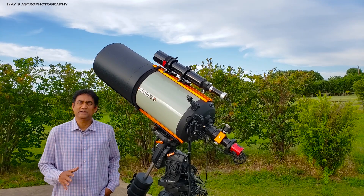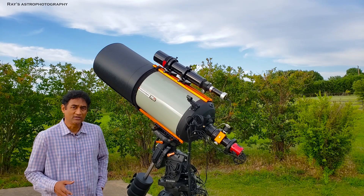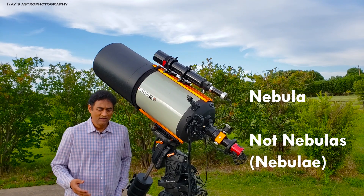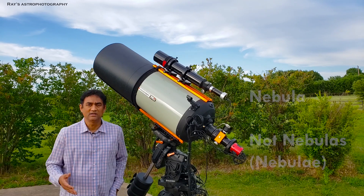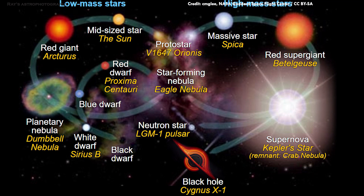I never took a deep space object other than galaxies using these long focal length telescopes. When I say deep space objects other than galaxies, we have something called nebulae. Some of them are actually the reasons why we see our sun and a bunch of solar systems around. We also see galaxies. In some cases, these nebulae are formed by the end of a star.